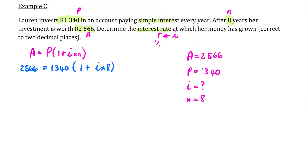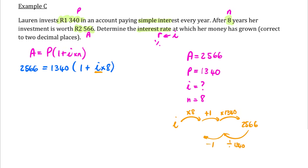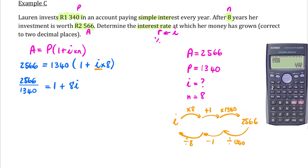We reverse that process. We divide by 1,340, subtract one, and then divide by eight. So: 2,566 divided by 1,340 equals one plus I times eight — that's eight I. From this fraction, you don't need to work with decimals here, but if you do, you need to keep all of them on your calculator. You can't round off early. This is going to be one plus eight I.